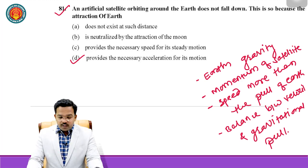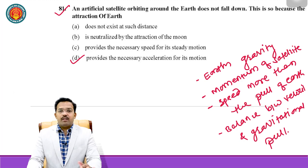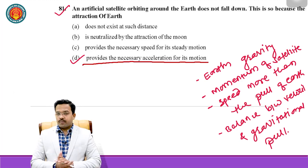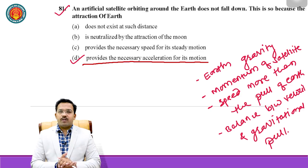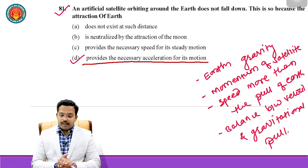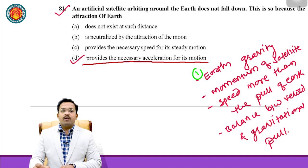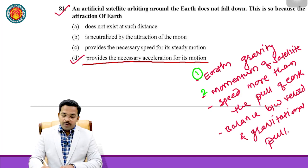Question 81: An artificial satellite orbiting around the Earth does not fall down. This is so because the attraction of the Earth provides necessary acceleration for its motion. There are two reasons behind why a satellite does not fall towards the Earth. The first reason is the gravitational force of the Earth, and the second reason is the momentum of the satellite.